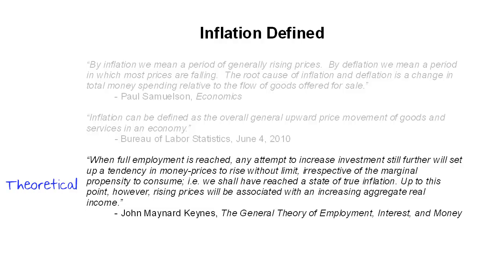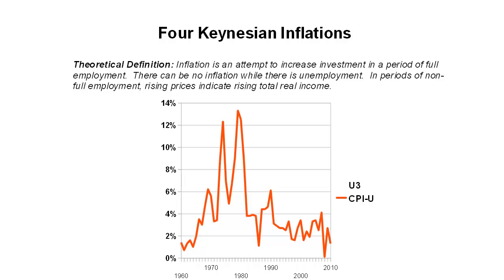"Up to this point, however, rising prices will be associated with an increasing aggregate real income." So if we translate that into more straightforward terms, the theoretical definition of inflation as provided by Keynes himself is that inflation is an attempt to increase investment in a period of full employment. That means there can be no inflation while there is unemployment, and in periods of non-full employment, rising prices indicate rising total real income — ergo, no inflation.